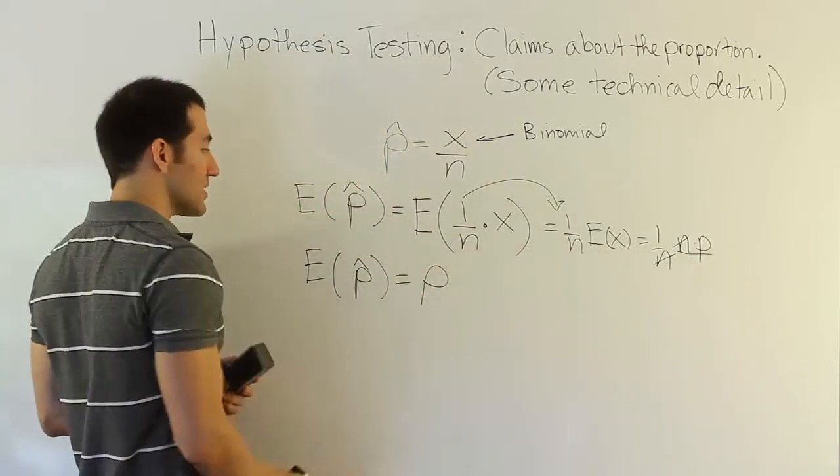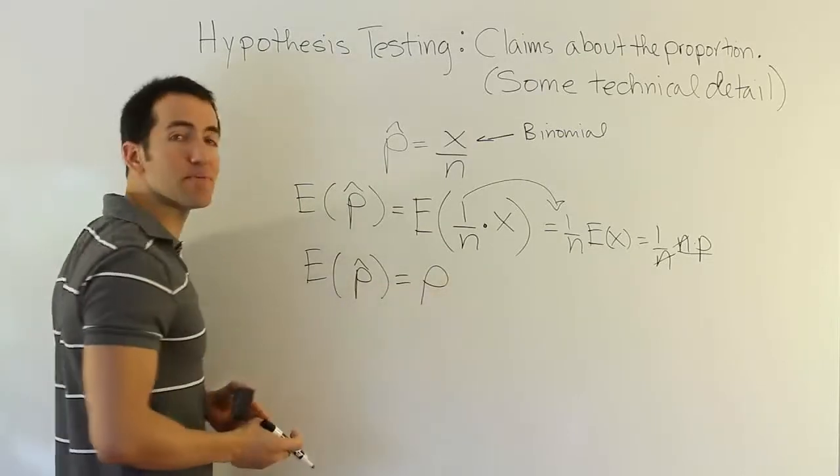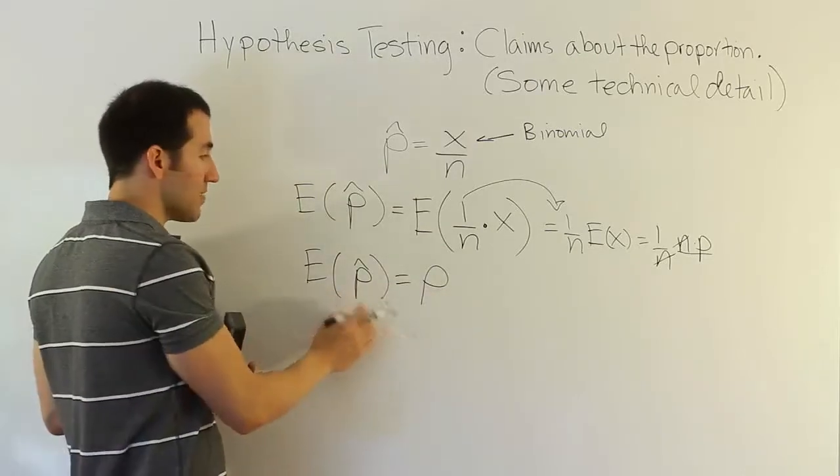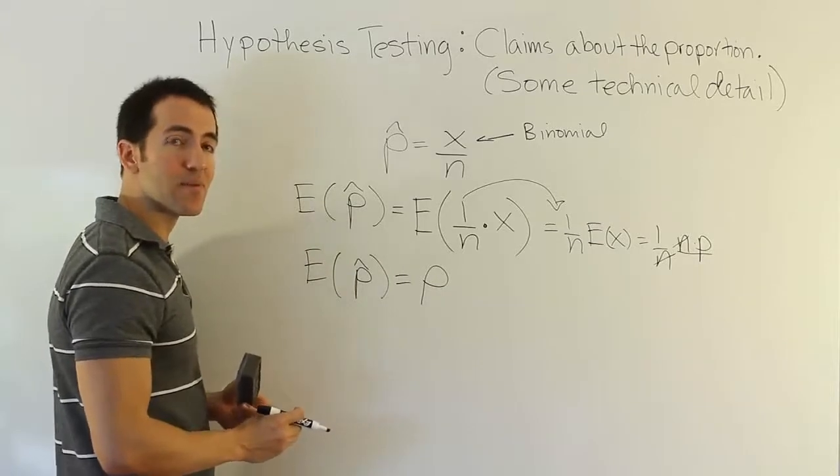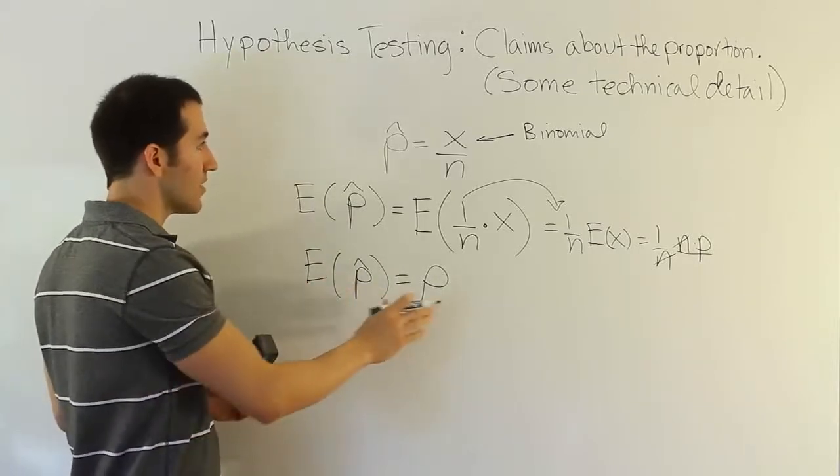And this is good because this means that p-hat is an unbiased estimator of the population proportion p, because its expected value is equal to the thing it's trying to estimate. That's a very nice feature. Okay, so we have that.